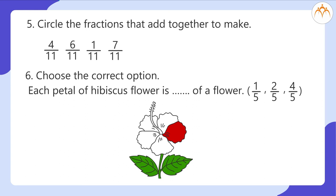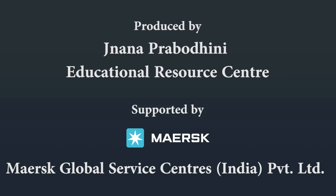Circle the fractions that add together to make. Choose the correct option. Each petal of hibiscus flower is blank space. Blank space of a flower. 1 fifth, 2 fifths, 4 fifths. Choose the correct option.